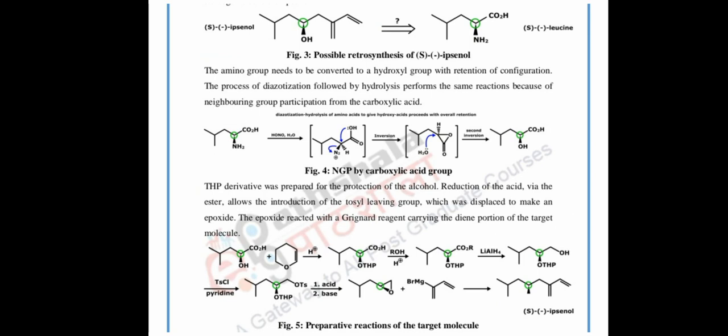A THP (tetrahydropyranyl) derivative is introduced: the OH group is protected as OTHP. Then ROH is added and an ester is formed — the COOH is converted to CO2R. Next, the ester is reduced using lithium aluminum hydride, converting CO2R to OH. Then TsCl in pyridine is added, converting OH to OTs. This is reacted with base to form an epoxide. The epoxide then reacts with a Grignard reagent to give S-ipsonol.